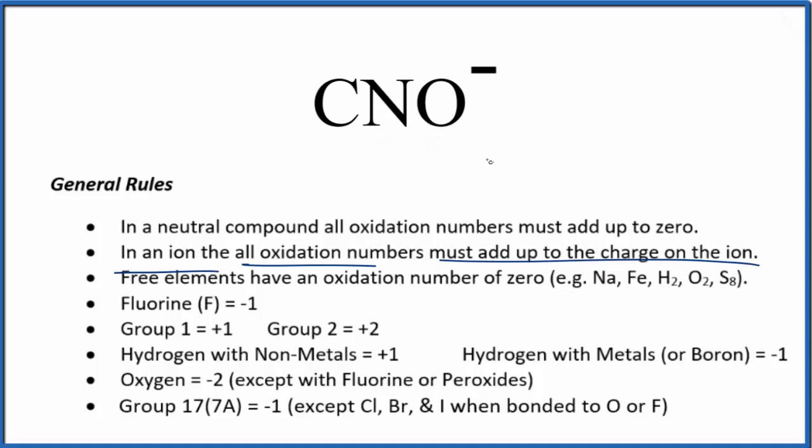We could write it as an equation here - all of those oxidation numbers equal minus one. We do know that oxygen is minus two with a few exceptions, so we could put minus two in for the oxygen. But we don't really know the carbon or nitrogen just looking at these rules. So we could say the carbon plus the nitrogen plus this minus two, that's all going to add up to the minus one, the charge on the ion.